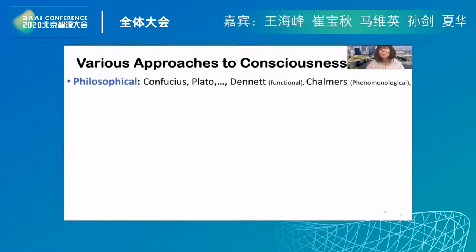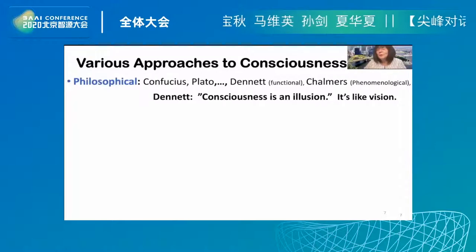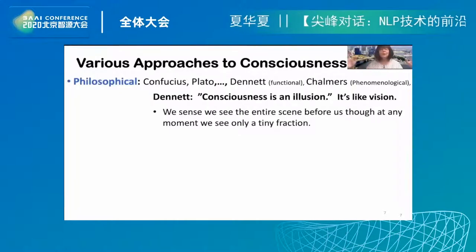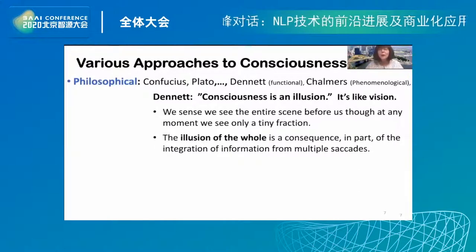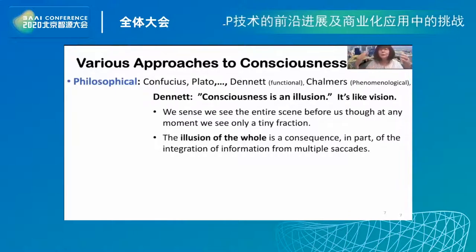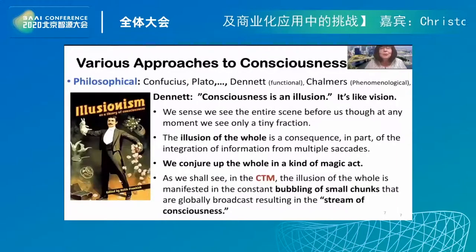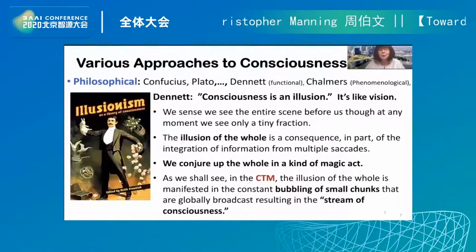We tend to be more aligned with Daniel Dennett. Dennett says consciousness is an illusion — it's like vision. We sense we see an entire scene before us, but at any moment we only see a small fraction. The illusion of the whole is a consequence, in part, of the integration of information from multiple sources. We conjure up the whole in a kind of magic act, as we shall see in our model, which we call the conscious Turing machine. The illusion of the whole is manifested in the constant bubbling of small chunks that are globally broadcast, resulting in a stream of consciousness.